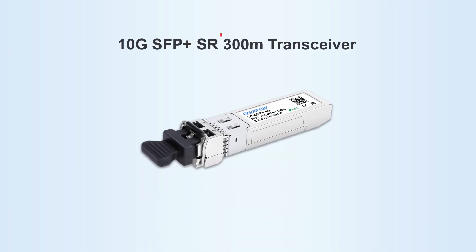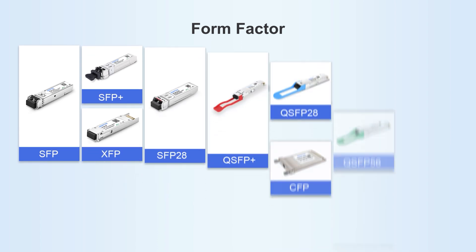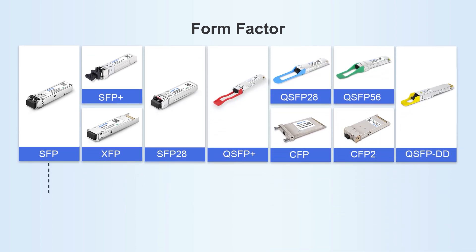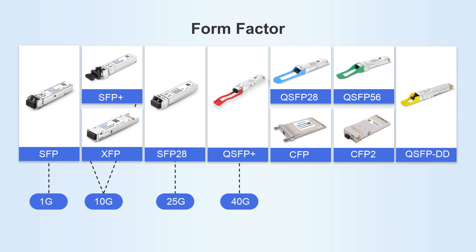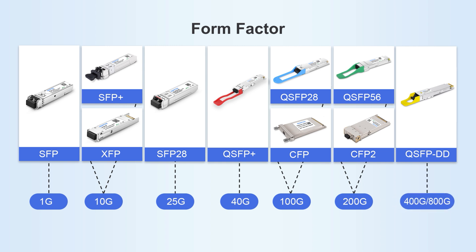When purchasing optical modules, you'll see terms like 1G and 10G for speed, but what about SFP and QSFP? These refer to the form factor — basically the physical shape of the module. The form factor of 1G optical modules is SFP; 10G form factors are SFP+; 25G form factors are SFP28; 40G form factors are QSFP+; 100G form factors are QSFP28 and CFP; 200G form factors are QSFP56 and CFP2; and 400G and higher speed optical modules adopt the QSFP-DD form factor. These are the more commonly used form factors.